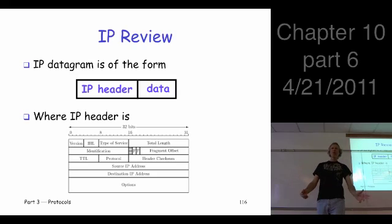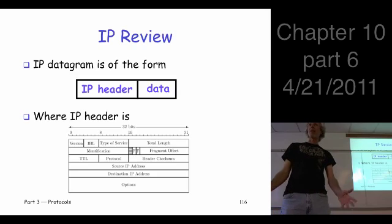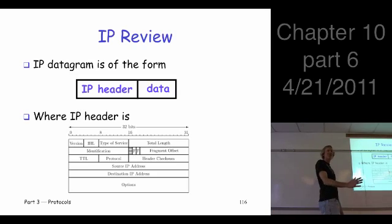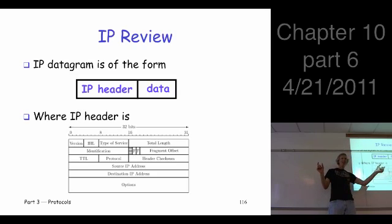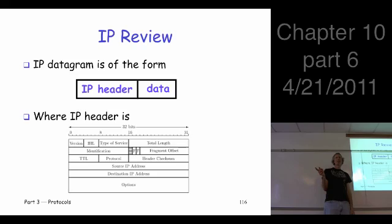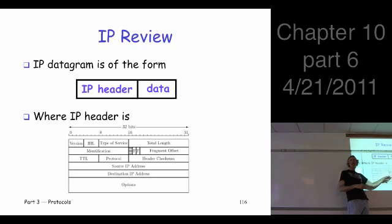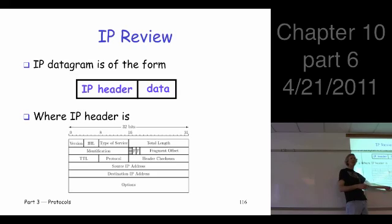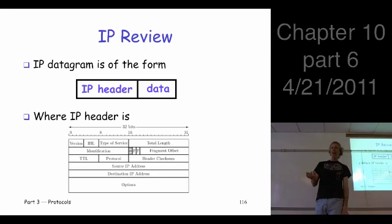Maybe we can integrity-protect the header? Not so fast. If you apply integrity protection between Alice and Bob, that means the routers better not change anything in that header. But routers do change things like time to live, fragmentation, and lots of other fields. Some things — like source and destination — you could conceivably integrity-check, but not everything. So even integrity protection is not so easy. We can't encrypt the header and we can only integrity-protect certain things in it.